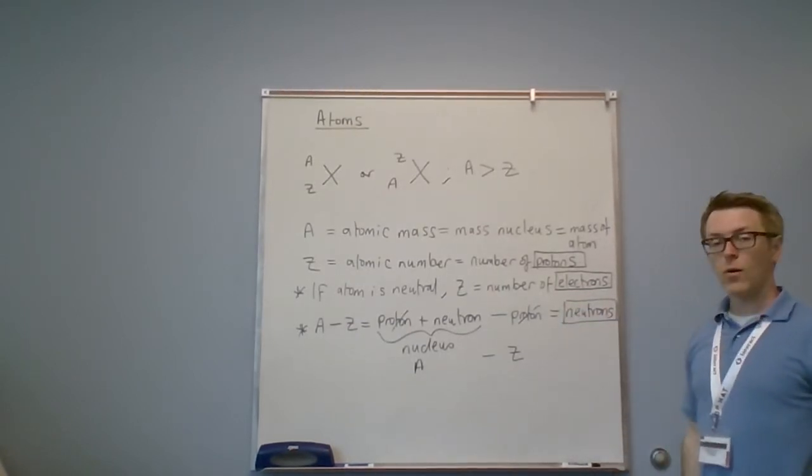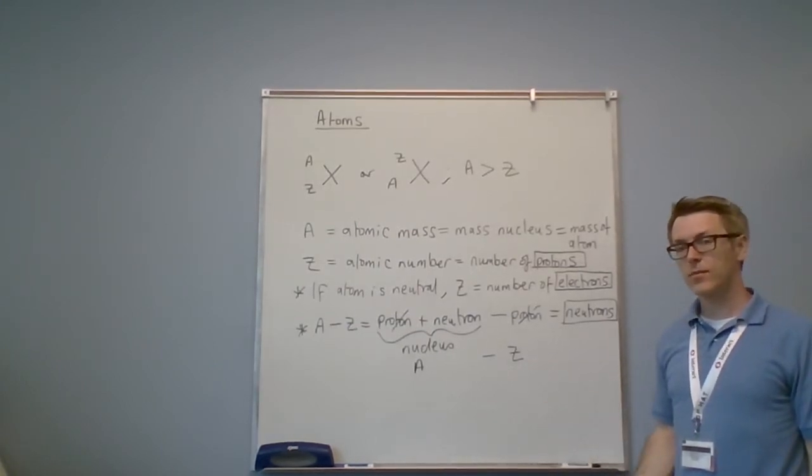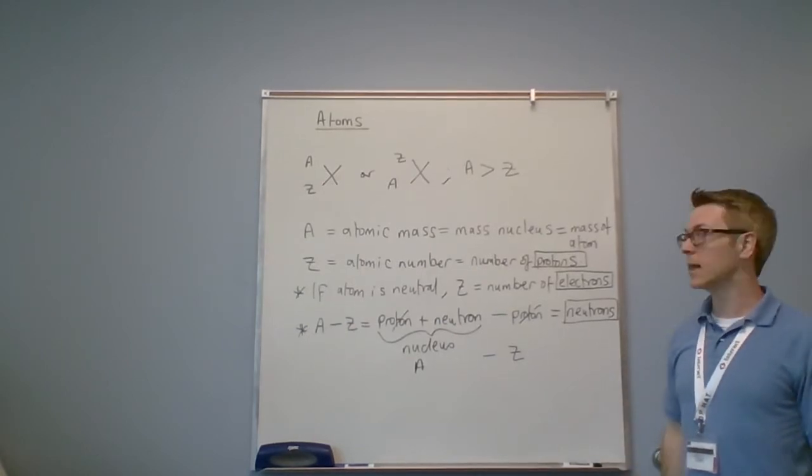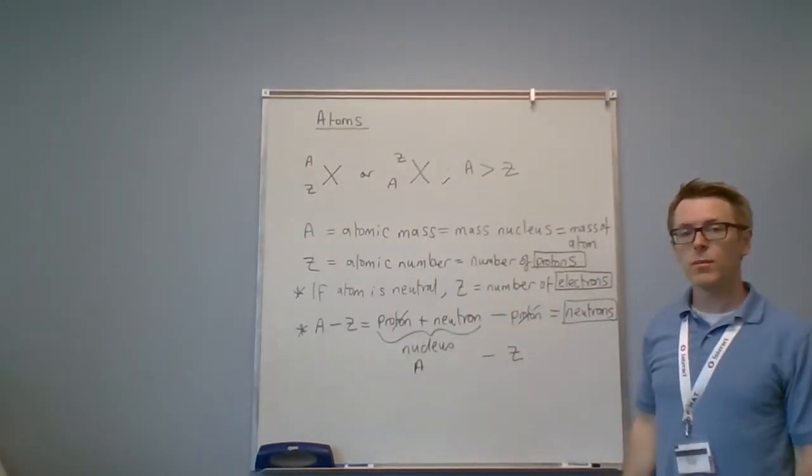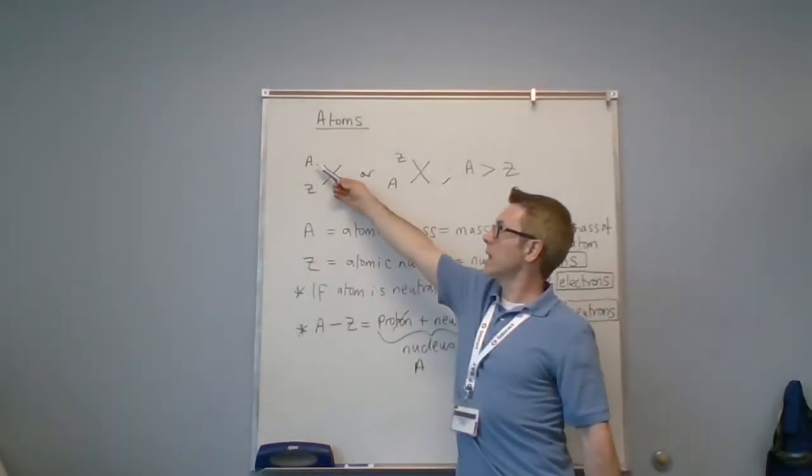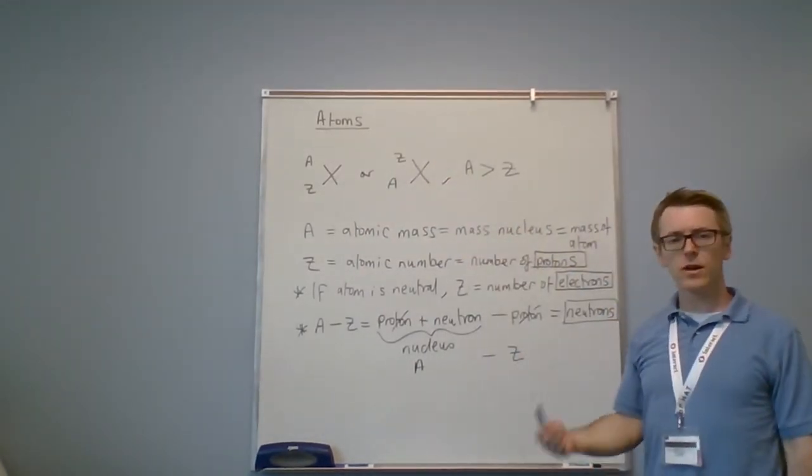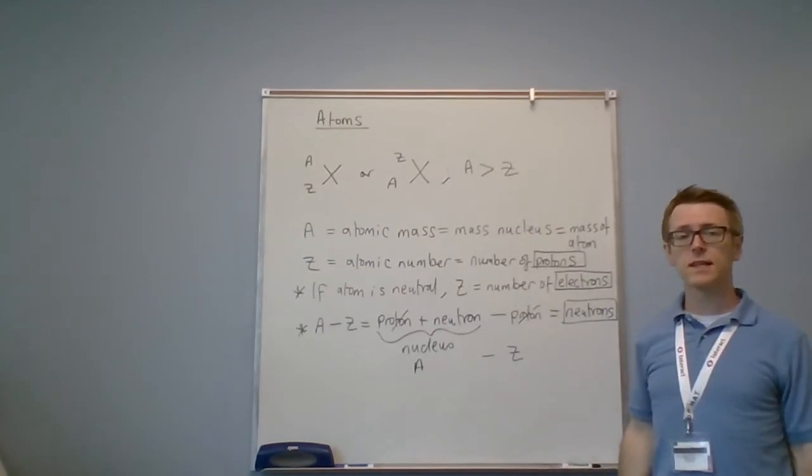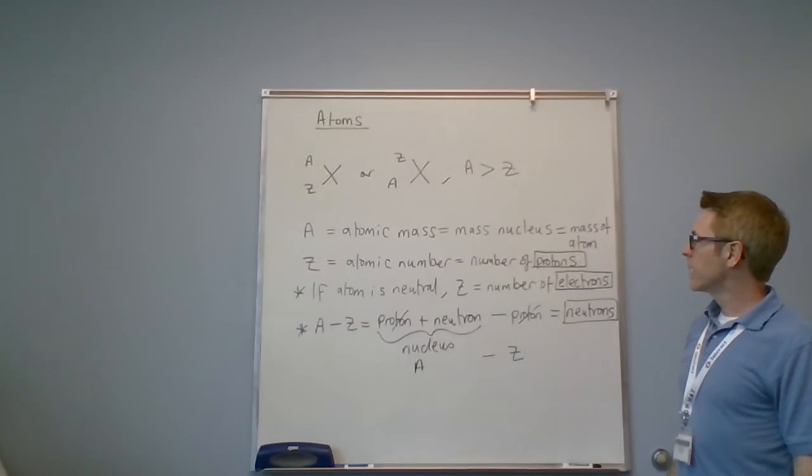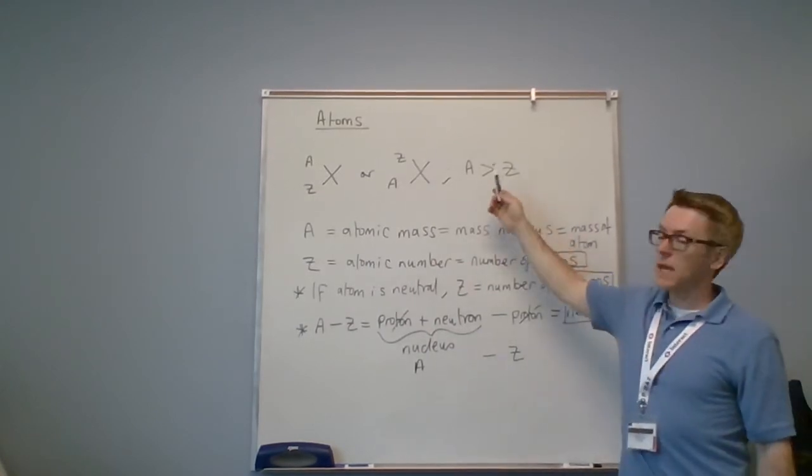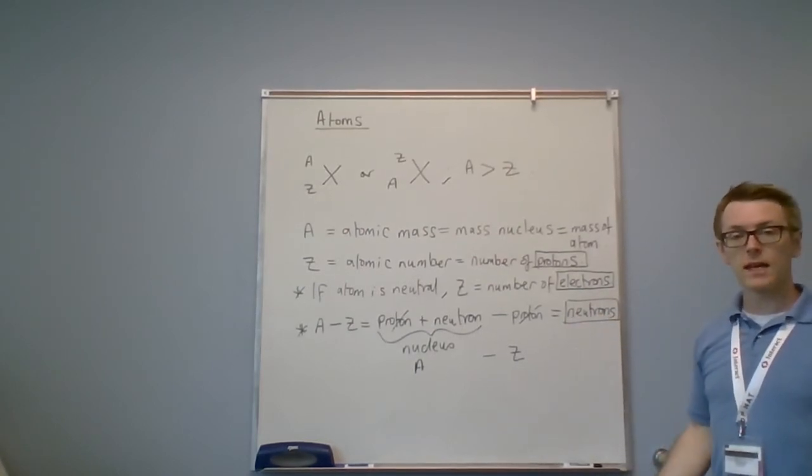So there are 118 elements total. Elements are types of atoms, so atom is a more generic term than element. Again, each element has a symbol X and two numbers that can either be written with the a up top and the Z down below, or vice versa. You can orient yourself because a is always greater than Z. Here's a definition of what a and Z mean, and from these two numbers, a and Z, we can identify the numbers of protons, electrons, and neutrons for any element.